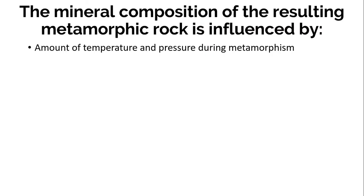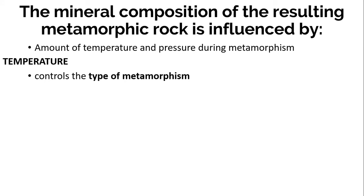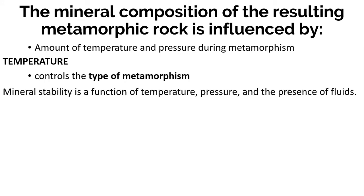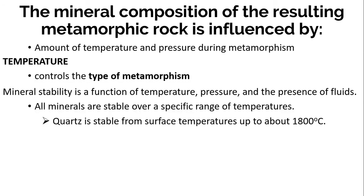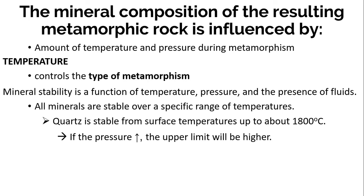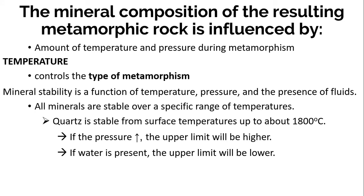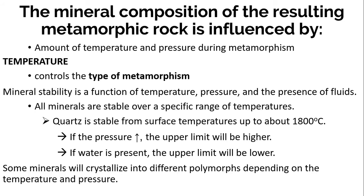The temperature a rock is subjected to is a key variable controlling the type of metamorphism. As with igneous rocks, mineral stability is a function of temperature, pressure, and the presence of fluids. All minerals are stable over a specific range of temperatures — for example, quartz is stable from surface temperatures all the way up to 1800 degrees Celsius. If pressure is higher, that upper limit will be higher; if water is present, it will be lower.